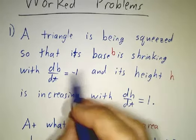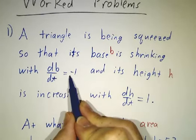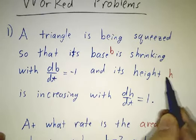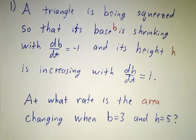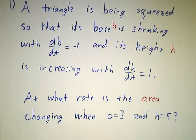The base is shrinking at a rate, and its height is increasing. We need to figure out the rate at which the area is changing when b equals 3 and h equals 5.